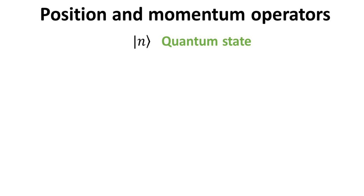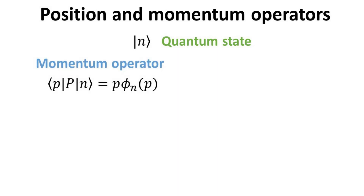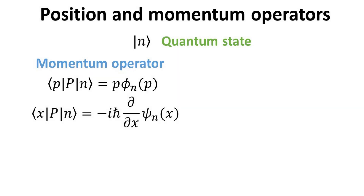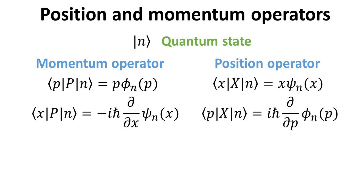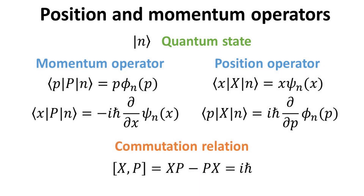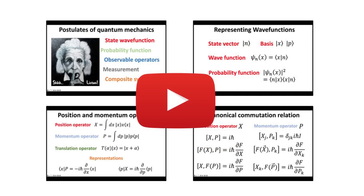Let's first set up the stage using the standard notations in quantum mechanics discussed in previous videos. Consider a general quantum state, herein denoted as n ket. The momentum operator p acting on n ket, in the momentum representation, is simply the momentum eigenvalue p multiplied by the state function phi of p. In the position representation, the momentum operator becomes a differential operator acting on the state function psi of x. The action of the position operator can also be written in similar forms in both representations. Finally, we have the well-known commutation relation between the x and p operators, which states that the two operators do not commute. Thus, there is no quantum state that is simultaneously an eigenstate of both the position and momentum operators. This commutation relation is a mathematical statement of the fact that x and p are incompatible observables.